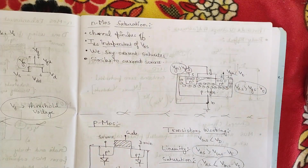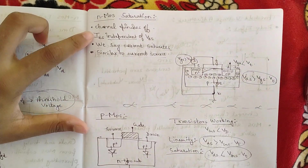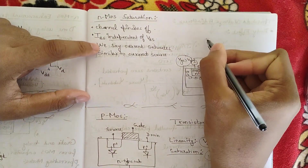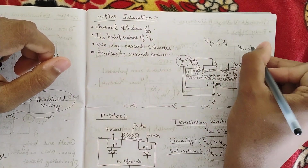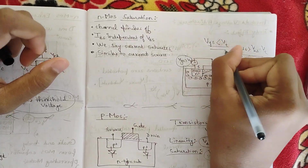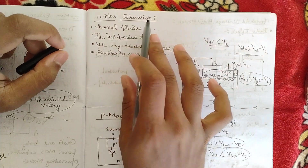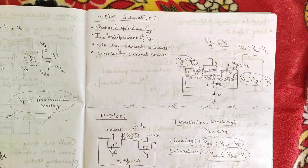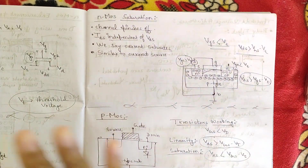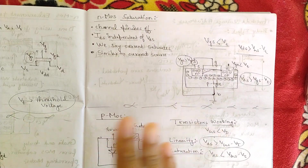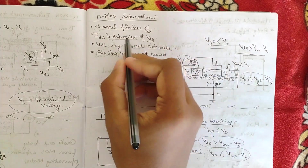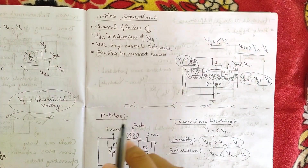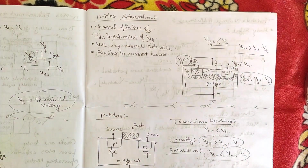In the NMOS saturation region, the relations are opposite to those of the linear region: VGS is greater than VT, and VDS is greater than VGS minus VT. The channel pinches off, meaning when the channel is continuously on, a sudden change to an off state occurs — this is called channel pinch-off. IDS becomes independent of VDS, meaning current saturates, and the transistor behaves similarly to a current source.